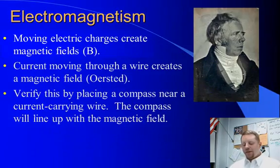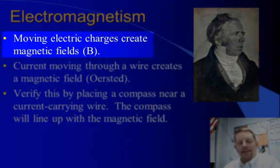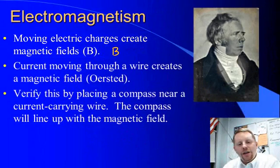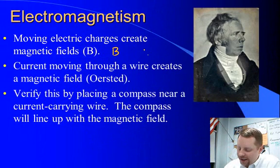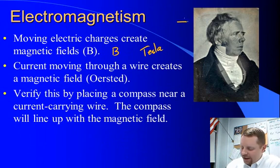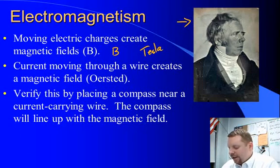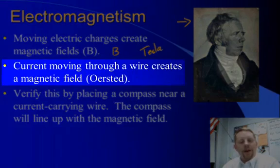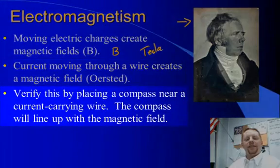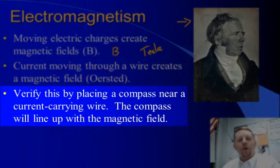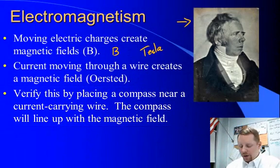So electromagnetism has to do with moving electric charges creating magnetic fields. The symbol for magnetic field strength is a capital B, and the SI units for magnetic field strength are Tesla, capital T. And a lot of this work began in around 1820 when Danish physicist Hans Christian Ørsted found that a current running through a wire created a magnetic field. And you can actually see this. If you take a compass and put it near a wire that has a current running through it, you will see the compass line up with the magnetic field caused by the current running through that wire.